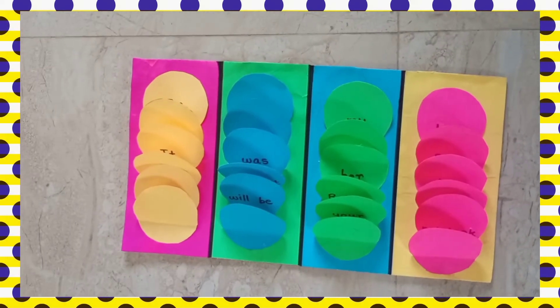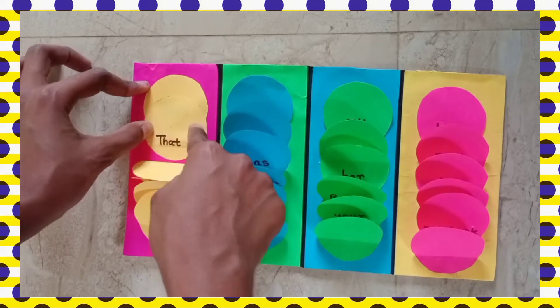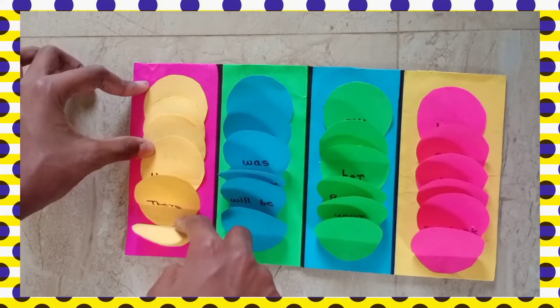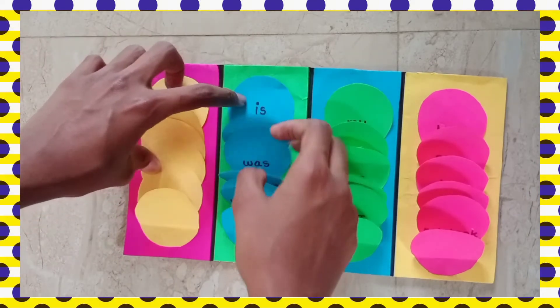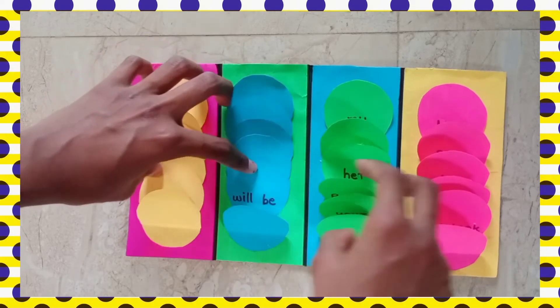This is very useful for the children to know the spelling of the words and also to read the sentences and the words. Now let me show you all the words: This, that, it, here, there. Next is, is not, was, was not, will be.